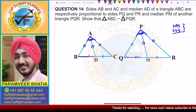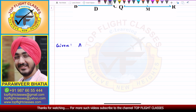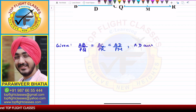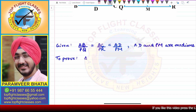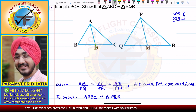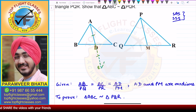We will do a construction. First, we will write what is given. What is given is that AB by PQ is equal to AC by PR is equal to AD by PM. The second thing given to us is that AD and PM are medians. We need to prove that triangle ABC is similar to triangle PQR.